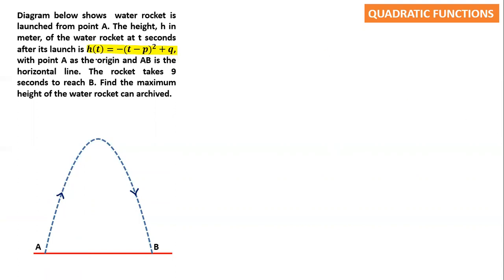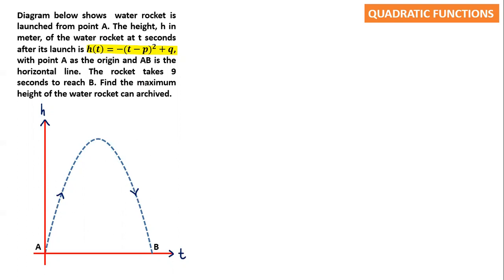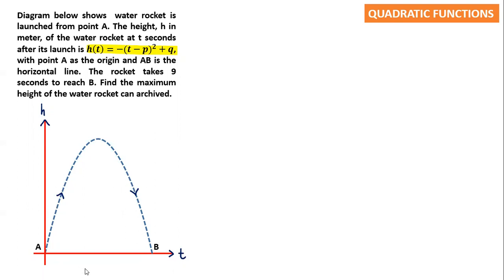The equation is in terms of h and t. H is the height and t is the time. With point A as the origin — A is the origin, so A is zero. Since it's the origin, I can set up an x-y type of graph. I'm going to put the horizontal axis as t, which is time, and the vertical axis as h, which is the height. AB is a horizontal line, meaning it's along the t-axis.